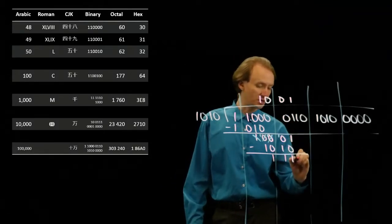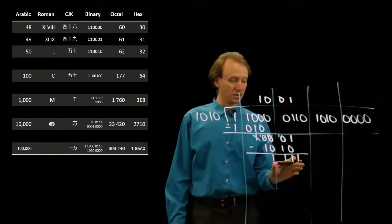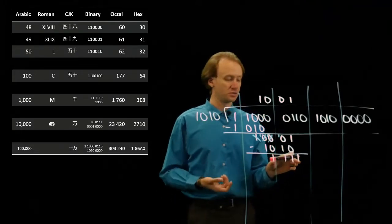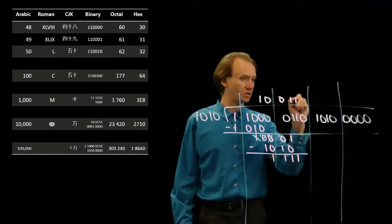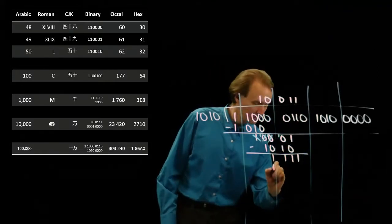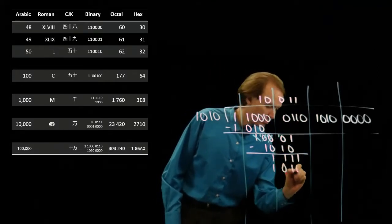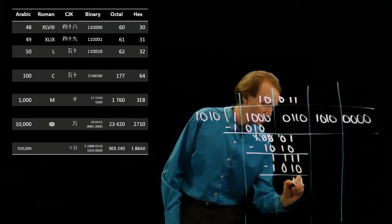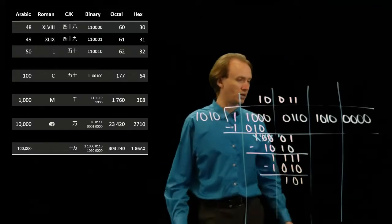Now I'll bring down my next bit, which is a 1. Now I've got a block of all 1s. So this will obviously go into it. I'll write down a 1 there. Do my subtraction. Get 101 out.